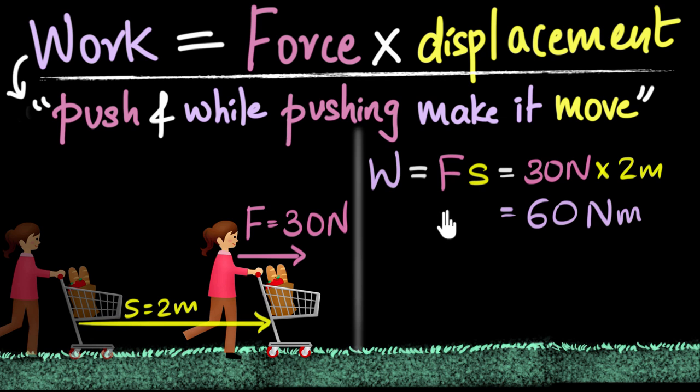Now because work is something that we'll be using in physics over and over again, we decided not to write newton meter over and over again. So we gave newton meter a name. We call newton meter a joule given by capital J. So capital J stands for a joule. It's named after a scientist. And so the unit of work done is also joules. So over here we can say she did 60 joules of work on that shopping cart.